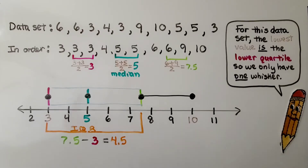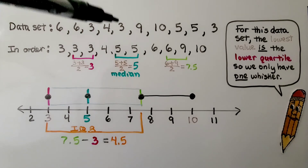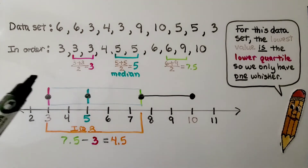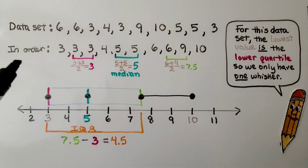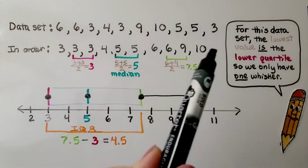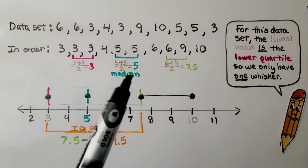Here's our data set: 6, 6, 3, 4, 3, 9, 10, 5, 5, and 3. We put them in order from least to greatest, and we find the median.